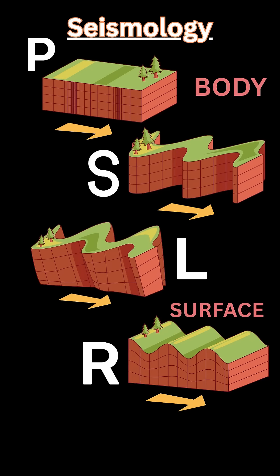Then we have the two surface waves: L stands for Love and R stands for Rayleigh. These two are special because they cause the majority of damage, as they are focused and concentrated along the surface where things are built. They move concurrently at the same speed, between 2 to 4 kilometers per second. The L wave moves side to side, while the R wave moves in orbital propagation — big circles — so together they can really move the ground and cause a lot of damage.